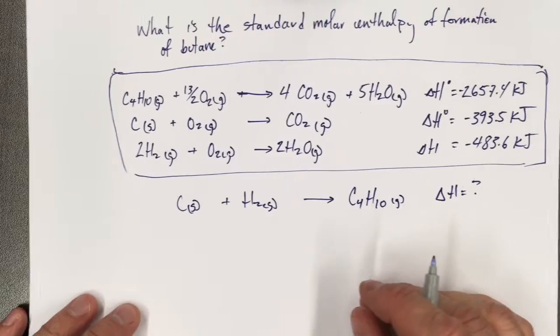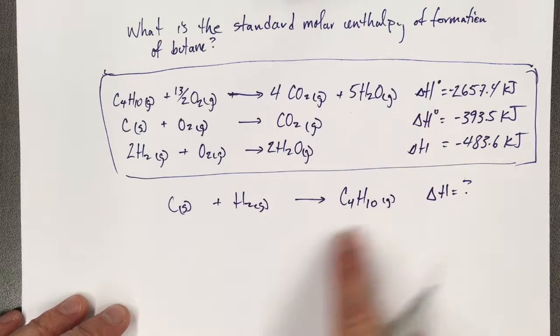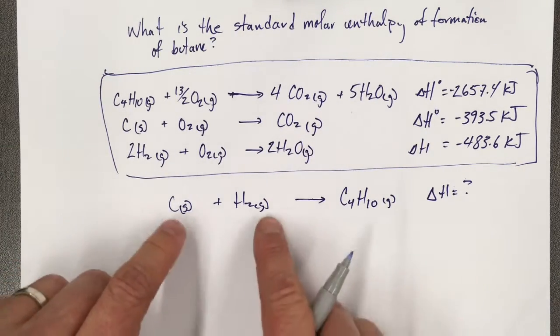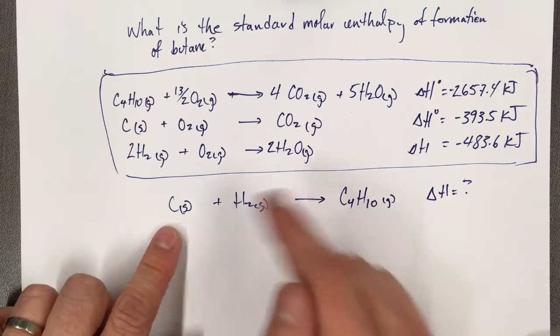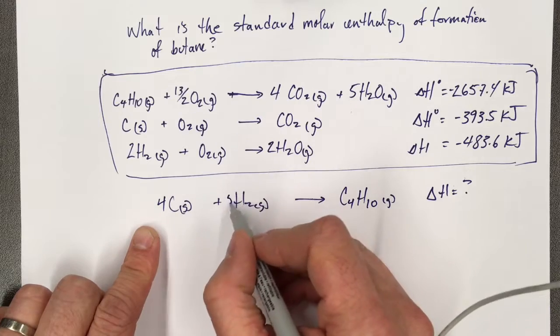Well, so if I know these reactions, I can manipulate them to come out with this net reaction. Now, this isn't balanced, so I have to balance it. This is going to be a 4, and this is going to be a 5.